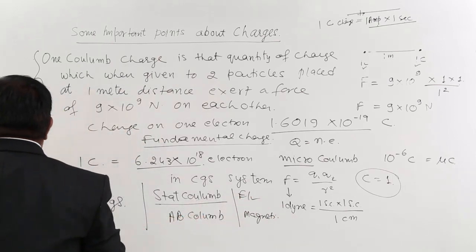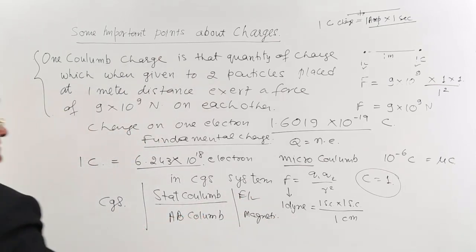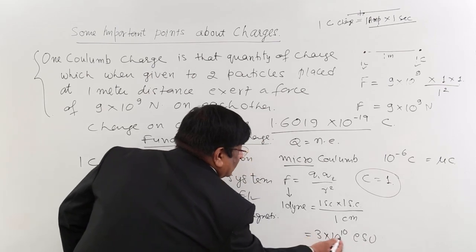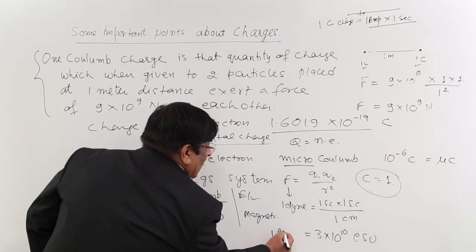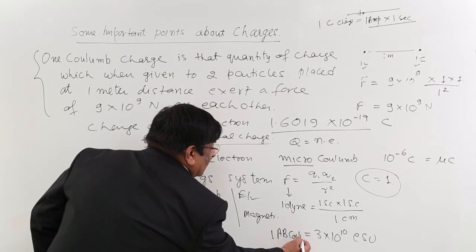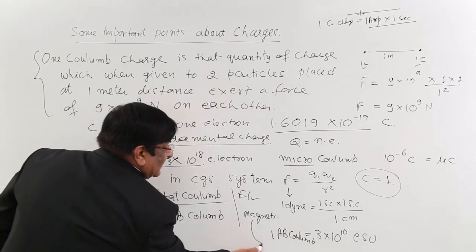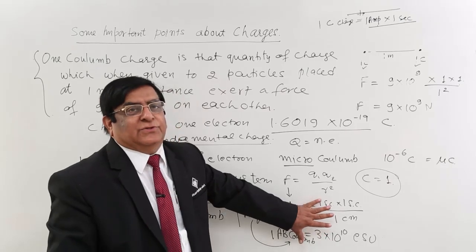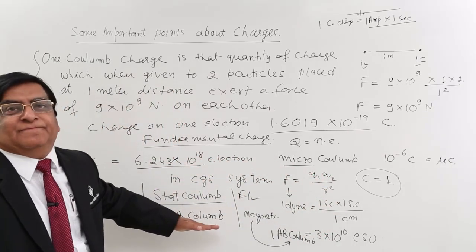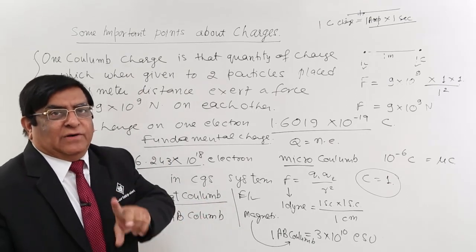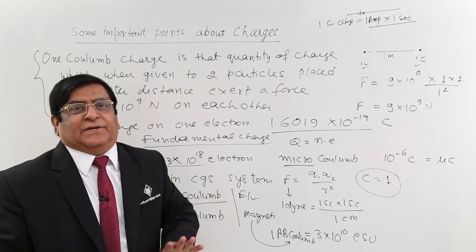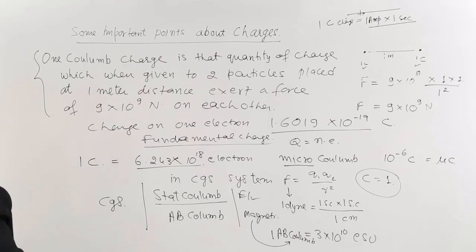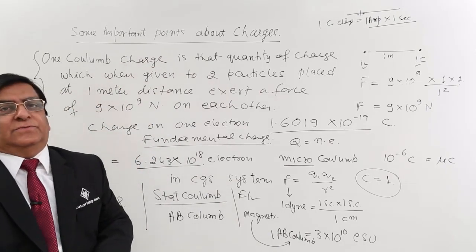The relation between them is that 3 × 10¹⁰ ESU (electrostatic units, i.e., stat coulombs) equals 1 ab coulomb, which is the electromagnetic unit. However, all this is history — study and remember it only if it is in your syllabus. Nowadays we use the SI system with coulomb and its definition. These were certain important points related to electric charge.